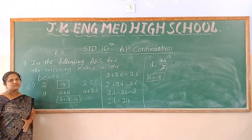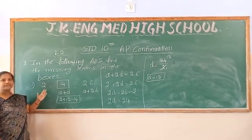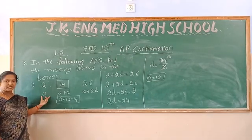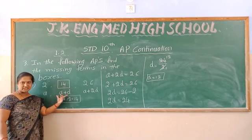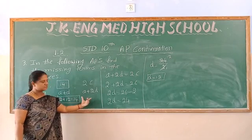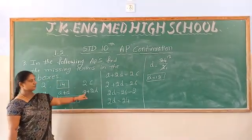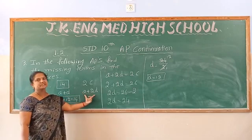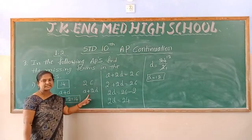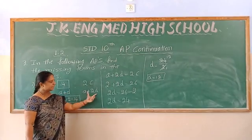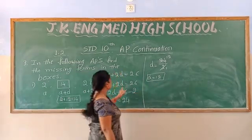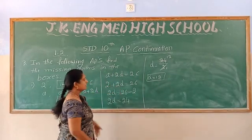As I mentioned, these three terms are part of an AP. If it is an AP, then it follows the AP rule. The first term we represent by a, second term by a plus d, and third term by a plus 2d. We know these two values; we already know the value of a as 2, so we can substitute and find the d value.